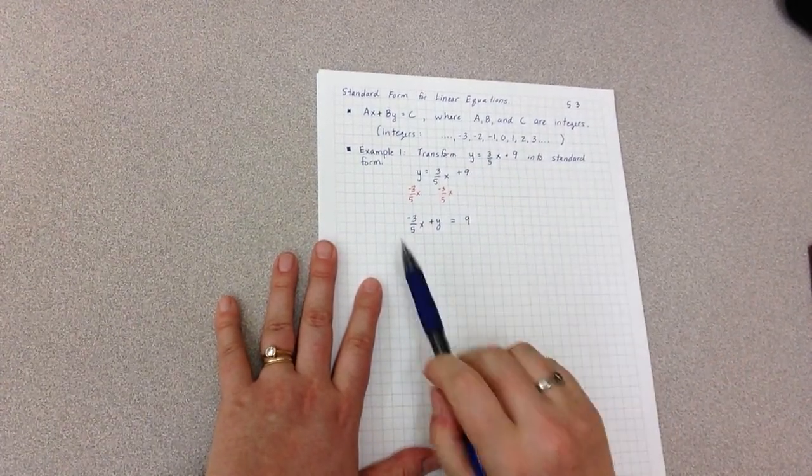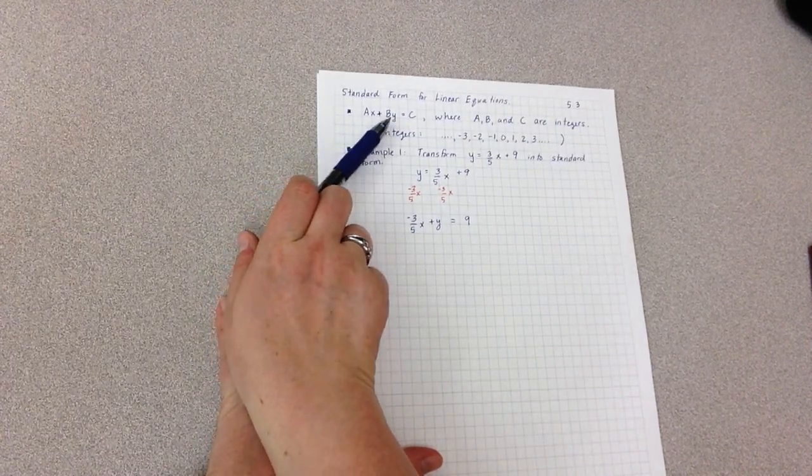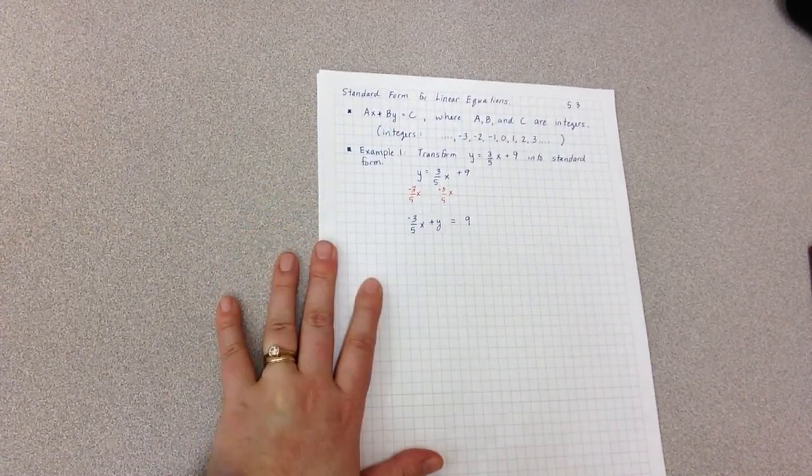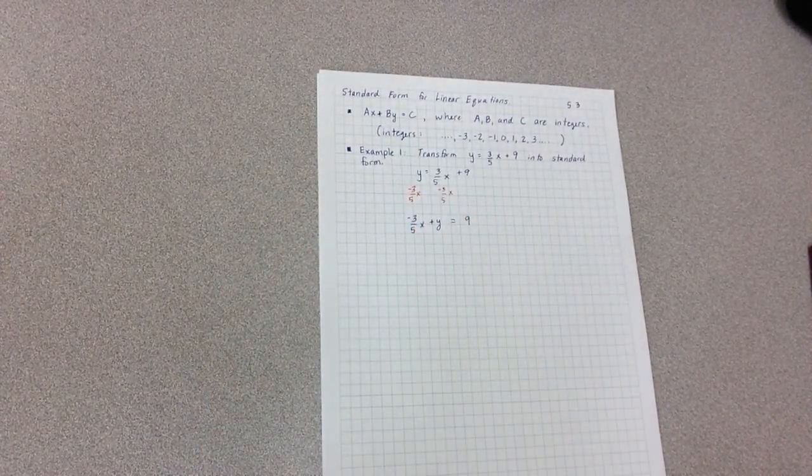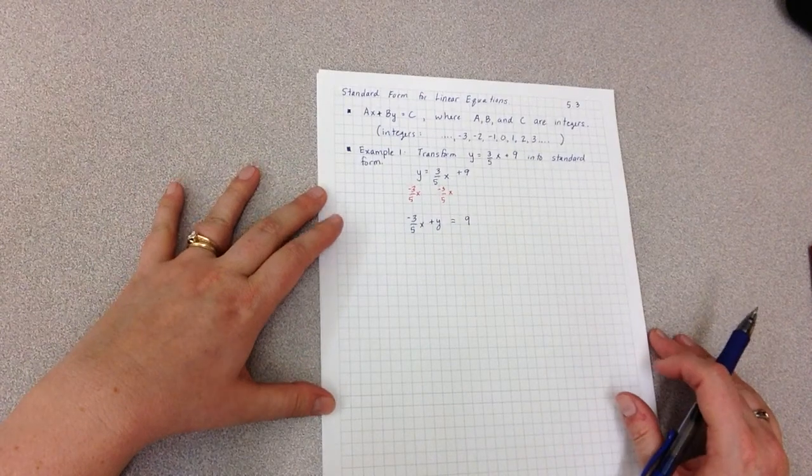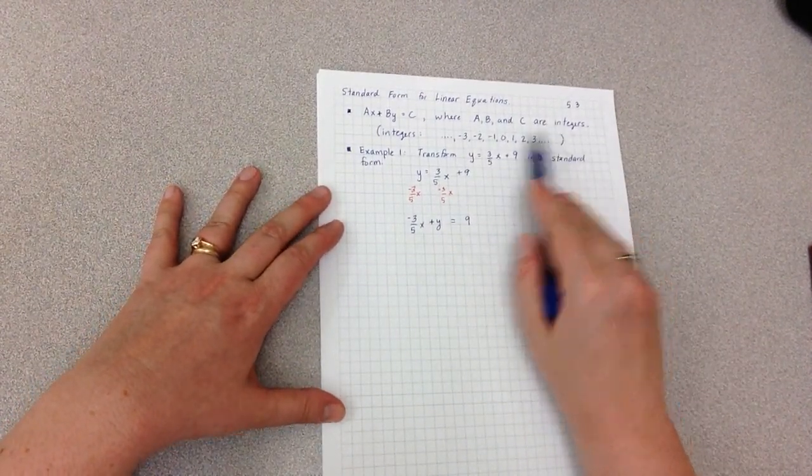So now I have it looking very similar to standard form. I have a number with an x and then a number with the y. Of course the number with the y here is 1, and I have it equals c, equals that plain number 9. The catch is that they have to all be integers.